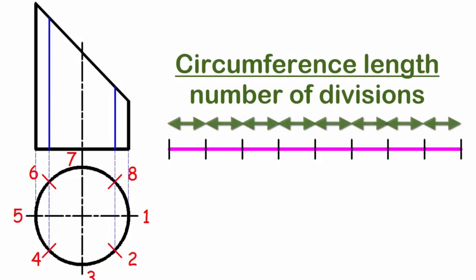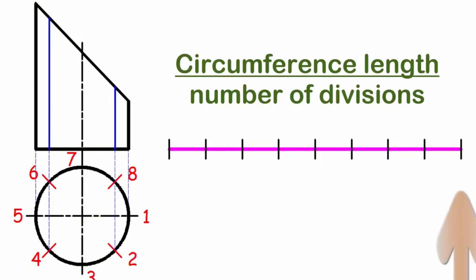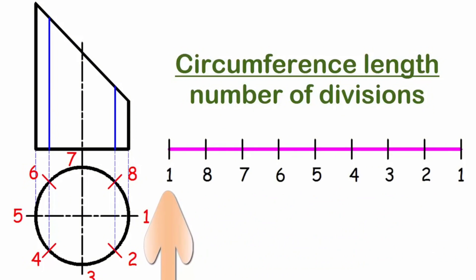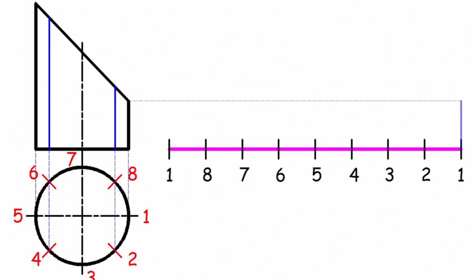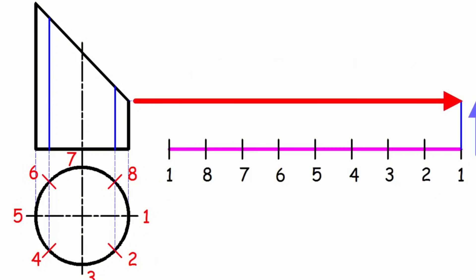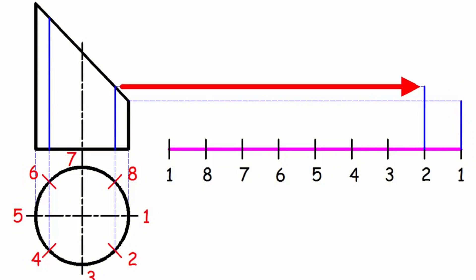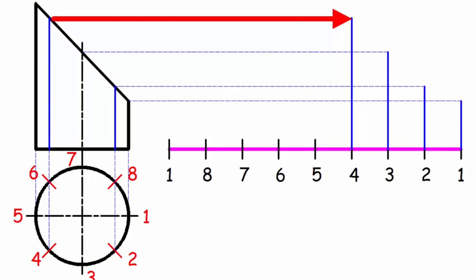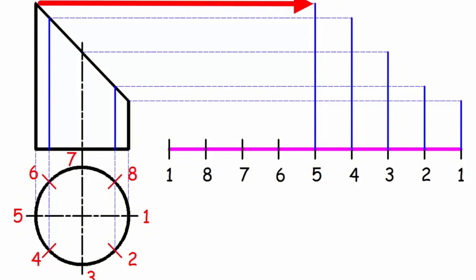And we write numbers from 1 to 8 at these points. We connect the vertical lines drawn from this straight line showing the length of the pipe and the intersection points of the 45-degree cutting surface of the pipe with horizontal lines.